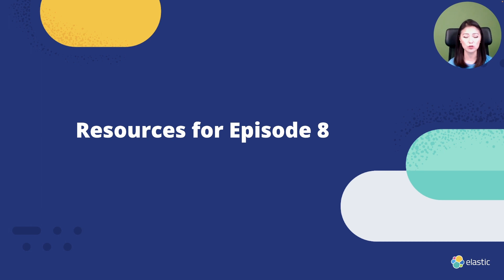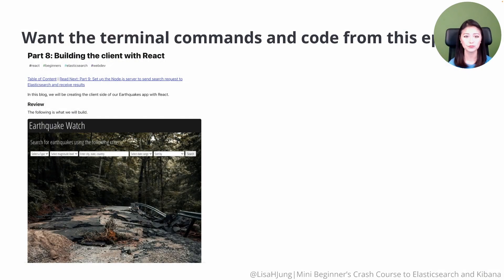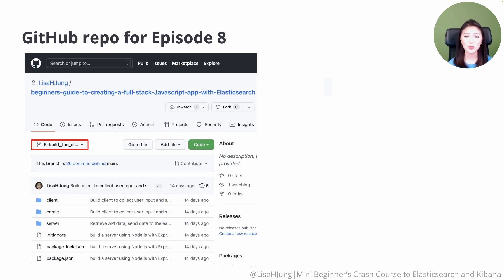So let's talk about the relevant resources for this episode. All the links to these resources are included in the description box. Throughout the episode, I'll be going over terminal commands and code. If you want to copy and paste these, check out Part 8 of the blog series. We also have a GitHub repo for Episode 8, so check out Branch 5 for the project directory from this episode.